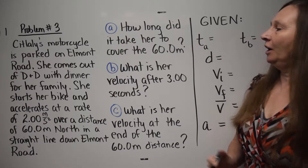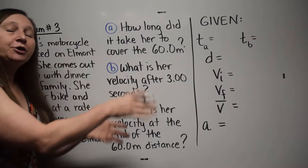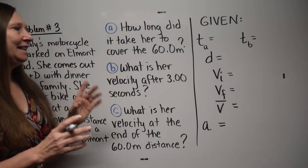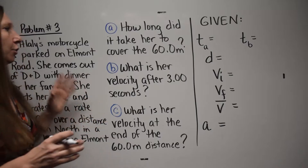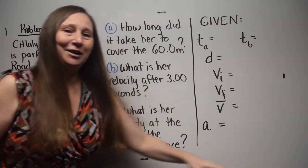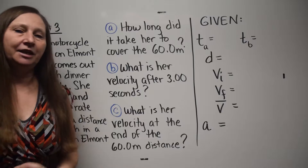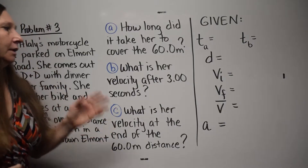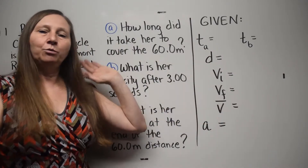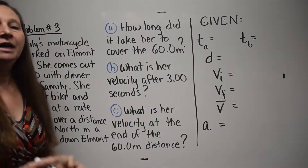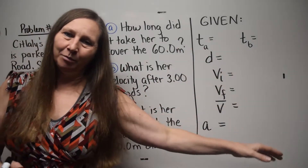Sidlali's motorcycle is parked on Elmont Road. Now remember, what you want to do here is watch me do the problem. After you've watched me do the problem, come back in the video to the point where this problem is blank. Come back to this point and try to do the problem completely on your own. After you watch me finish the problem, come back and try to do the entire problem on your own. If you have any problems doing the problem on your own, then watch me do the problem one more time.